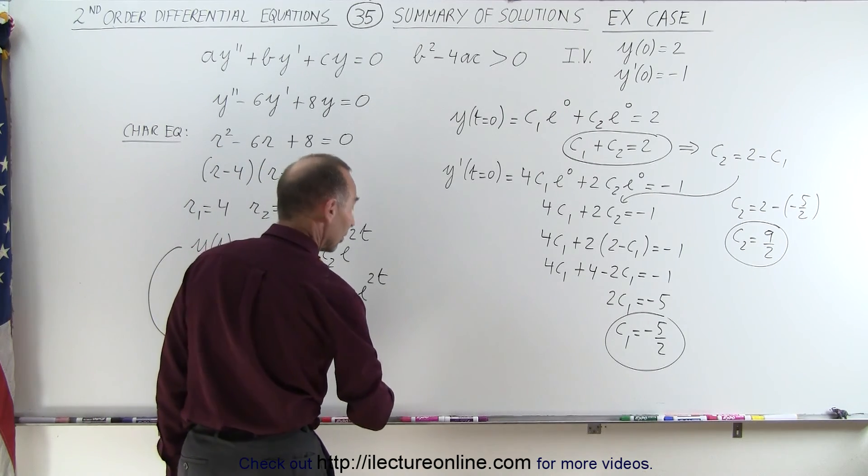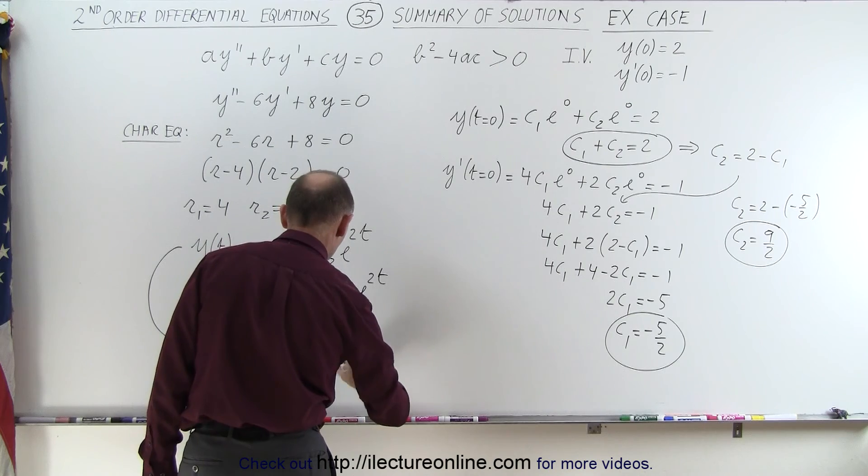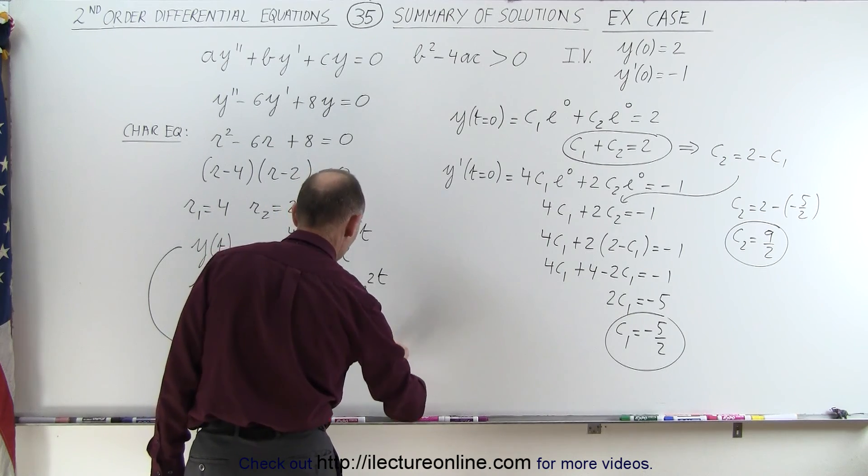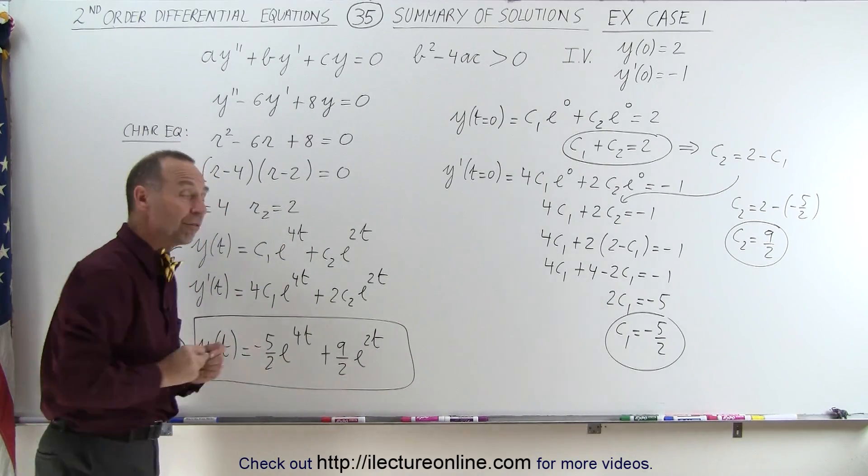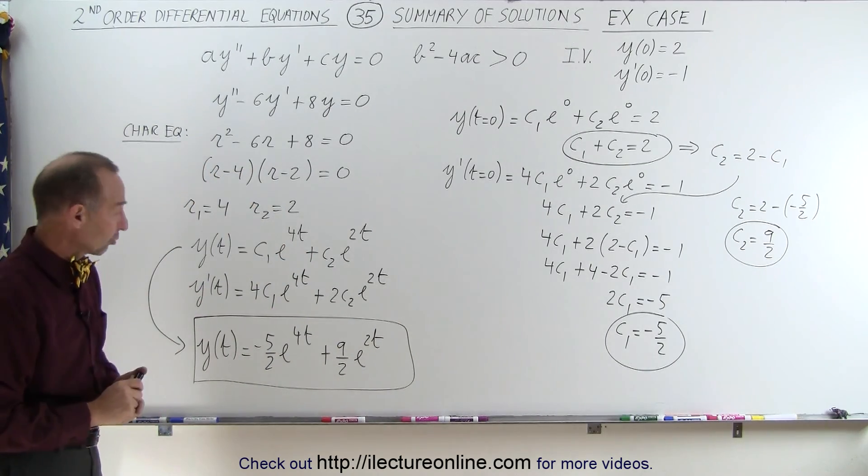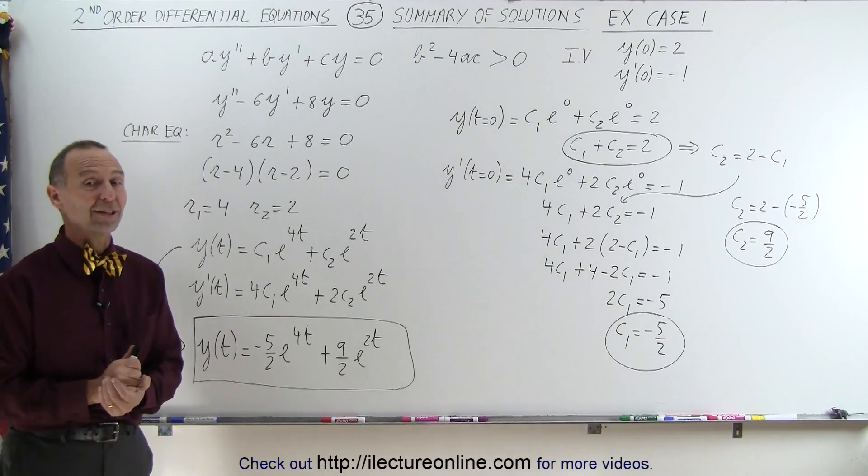and plus c2, which is 9 over 2, e to the 2t. And that would be the exact solution to the original differential equation using those initial conditions. And that's how that's done.